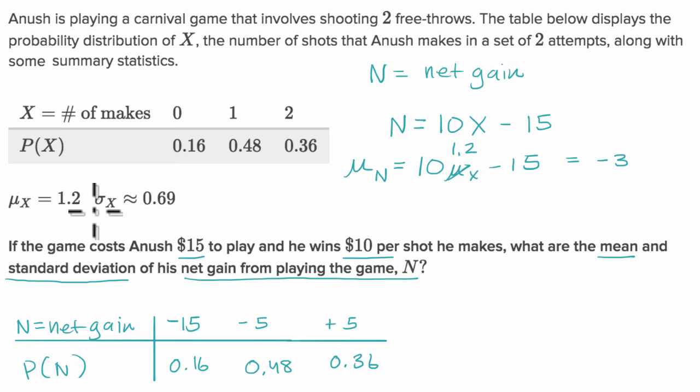Now the standard deviation of N is going to be slightly different. For the standard deviation, scaling matters. If you scale a random variable by a certain value, you would also scale the standard deviation by the same value.